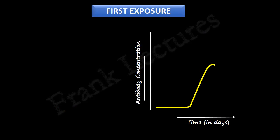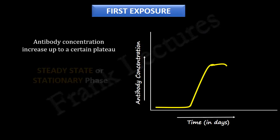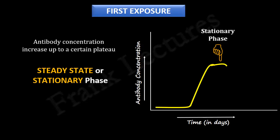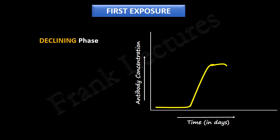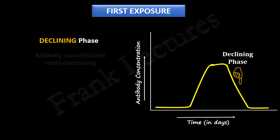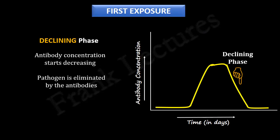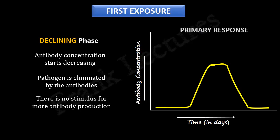The antibody concentration increases up to a certain plateau, known as the steady state or stationary phase. During this phase, antibodies are degraded as fast as they are formed — there is an equilibrium between antibody synthesis and degradation. Next, there is a declining phase, where antibody concentration starts decreasing because the antigen has been eliminated and there is no longer a stimulus for producing more antigen-specific antibodies. During the primary immune response, antigen-specific memory B cells take up residence in large numbers and remain in a resting state. This graph represents the primary immune response.